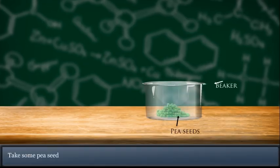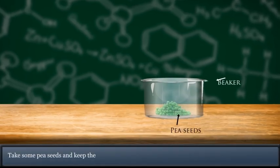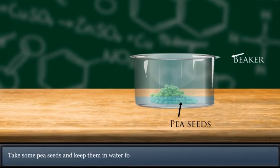Heat is released during respiration. Take some pea seeds and keep them in water for 24 hours till they start germinating.